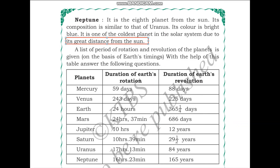These are the details about the eight planets of the solar system. In the next lesson, we will be learning about the periods of rotation and revolution of the planets. I will see you all in the next module.